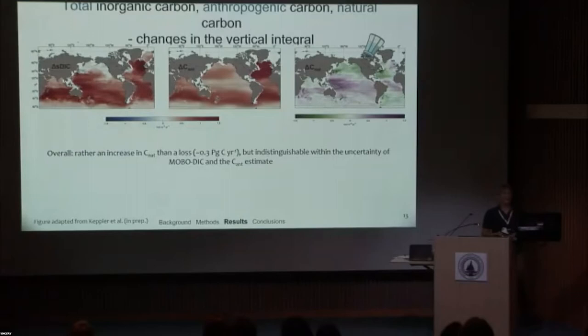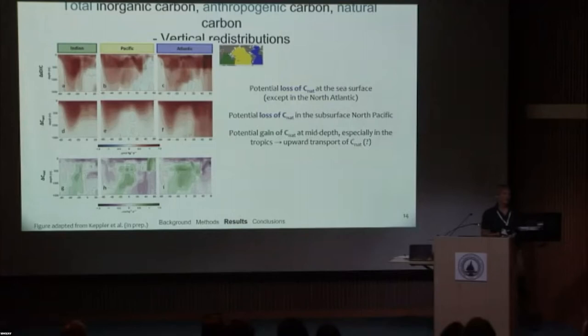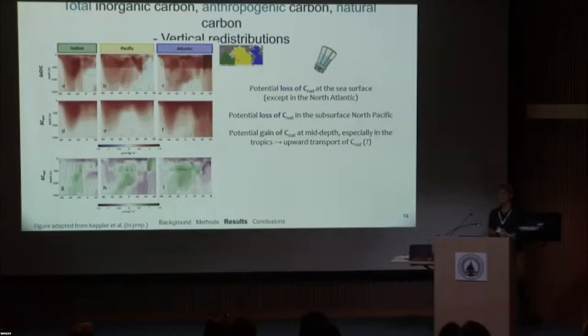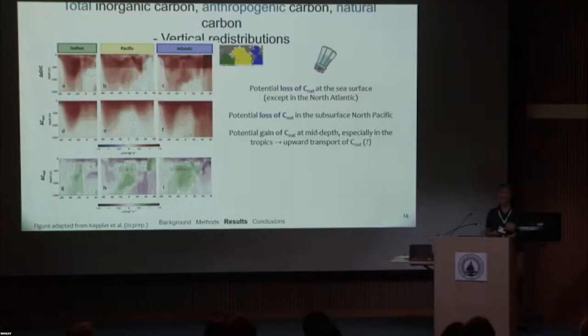Looking at the same in vertical sections — to be taken with a grain of salt — there may be a potential loss of natural carbon at the sea surface except in the North Atlantic, a potential loss of natural carbon in the subsurface North Pacific, and maybe a gain of natural carbon at mid-depth, especially in the tropics. This might be explained by a vertical redistribution and upward transport of natural carbon — but we hope to constrain this with more certainty in the future.